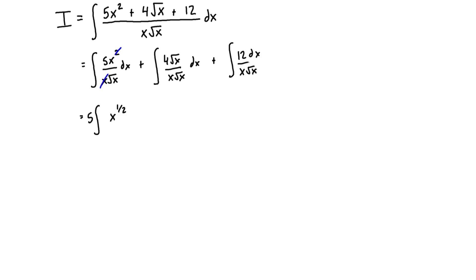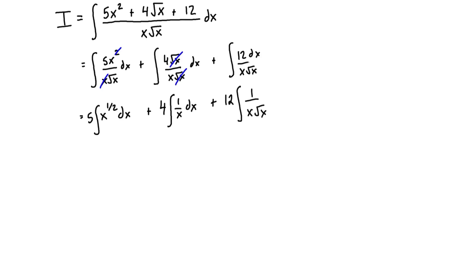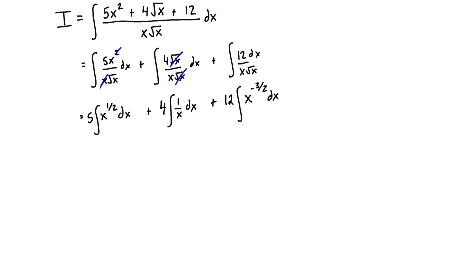Since 5 is a constant, we can bring it outside the integral sign, giving us 5 times the integral of x^(1/2) dx. For the second term, we bring out the constant 4. Canceling x√x over x√x, we're just left with 4 times the integral of 1/x dx. For the third term, we bring out 12 — this is 1/(x·√x), which is 1/x times x^(1/2), equal to 1/x^(3/2), or x^(-3/2) when brought to the top.